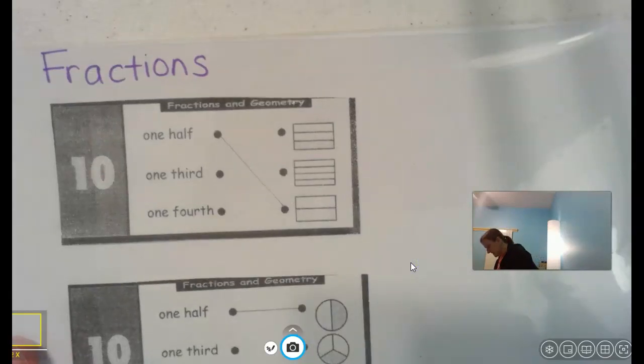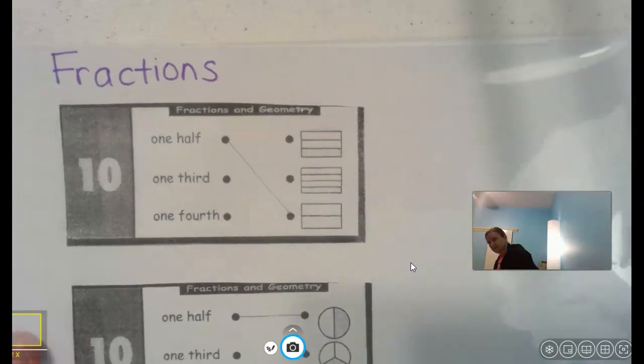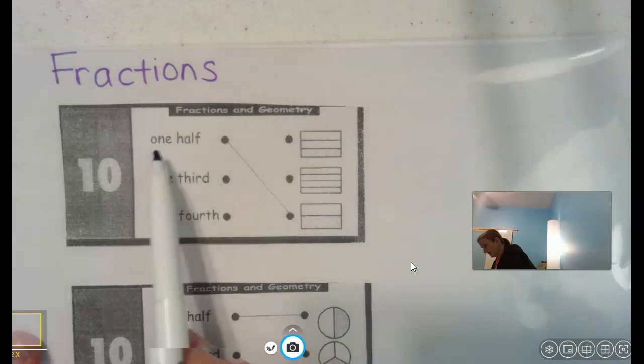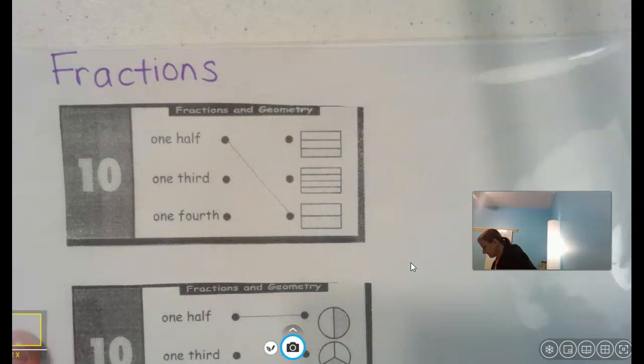For these, every single one of them, they want you to draw a line from the words to the picture that goes with it. One half, and if you need to look back at your math binder to help you, you can do that. So one half means you took the whole thing and split it into equal parts.